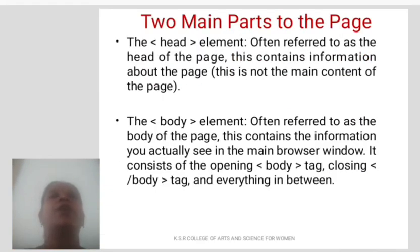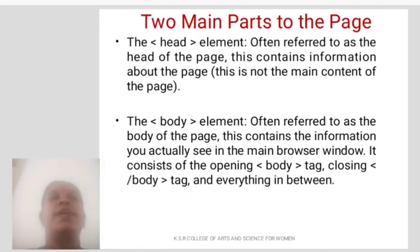There are two main parts to the page: the head element and the body element. The head element often refers to the head of the page and contains information about the page. The body element often refers to the body of the page and contains the information you actually see in the main browser window. It consists of an opening tag, body tag, closing body tag, and everything in between.